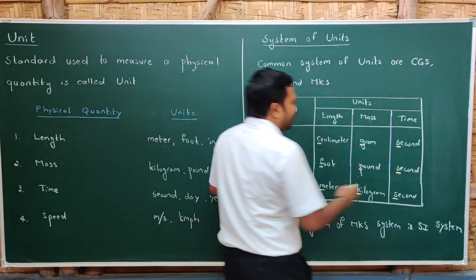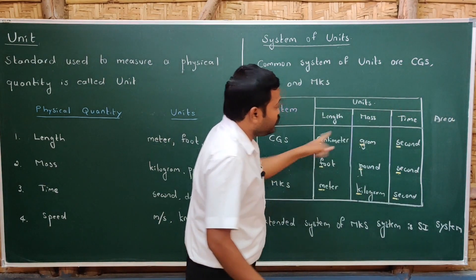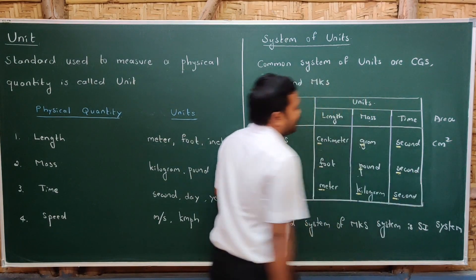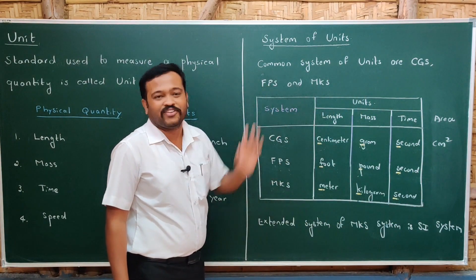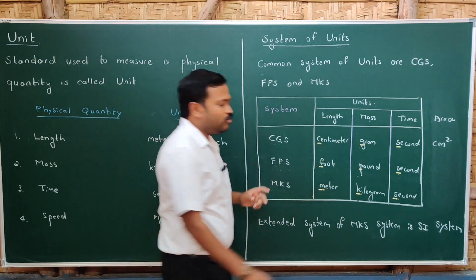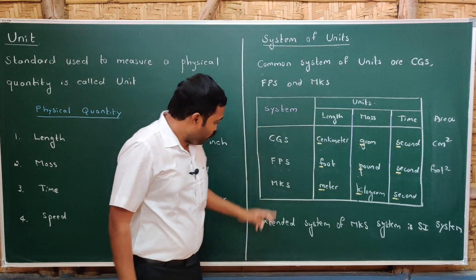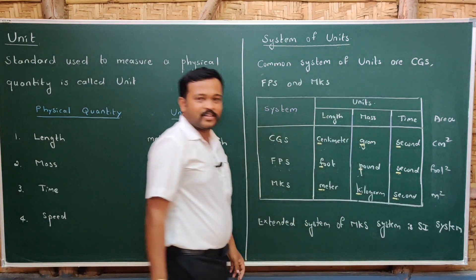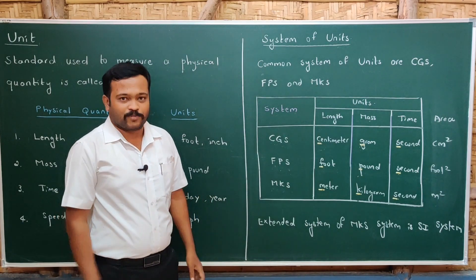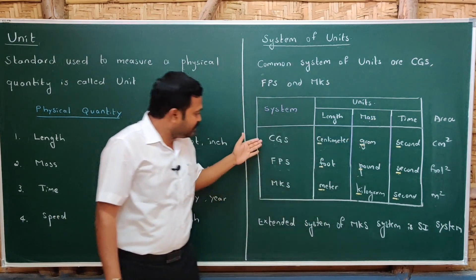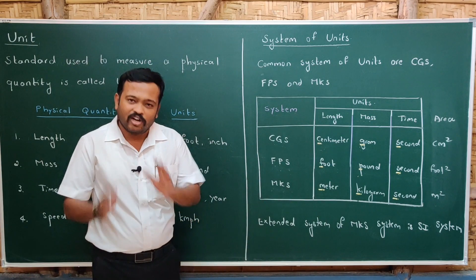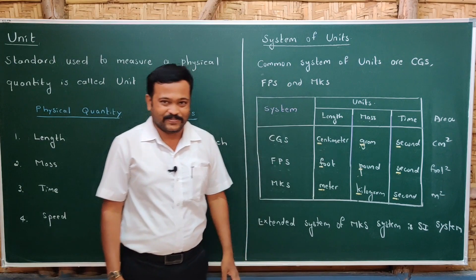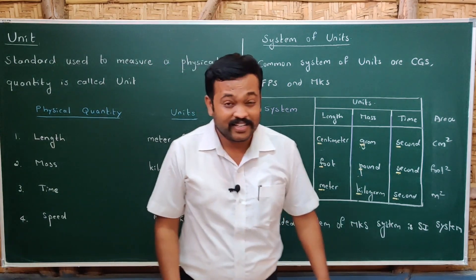Let us find the units of area in each system. In CGS, area is centimetre squared. In FPS, area is foot squared. In MKS, area is metre squared. These systems differ based on the units used to measure length, mass, and time. Today we no longer use these older systems — we use the SI system, which is an extended form of the MKS system. We will study the SI system in the next session. Thank you.